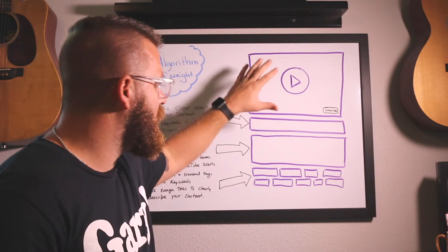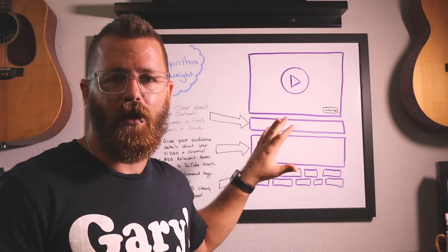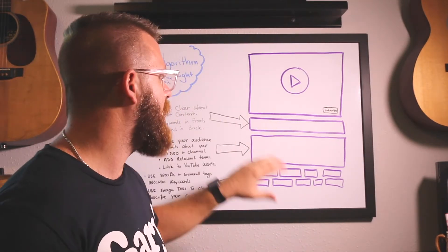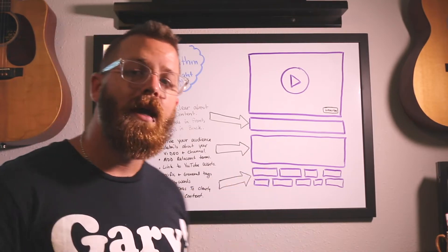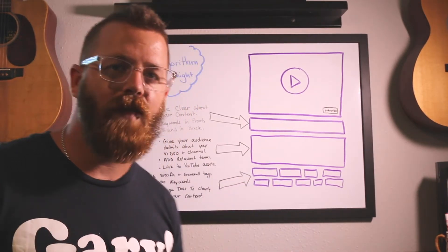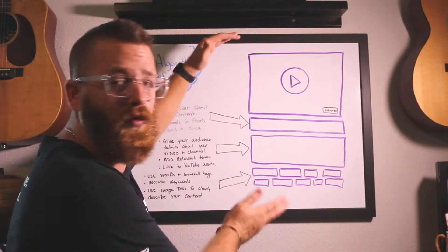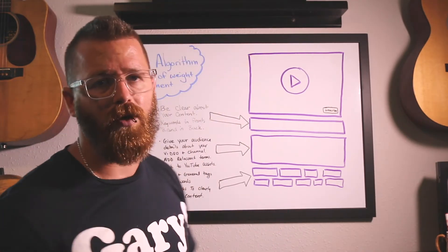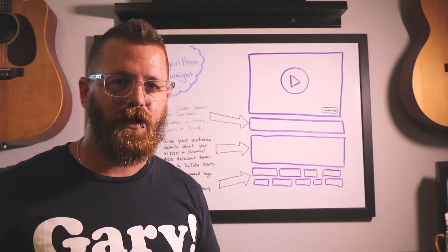Now, when we're optimizing our videos, typically this is what a YouTube video layout will look like. You have the video at the top, you have a title underneath, descriptions, then you have your tag box. Underneath that obviously is descriptions. There's a lot of other things going on, but this is really what you can control and what you need to focus on as the user, as the business owner.